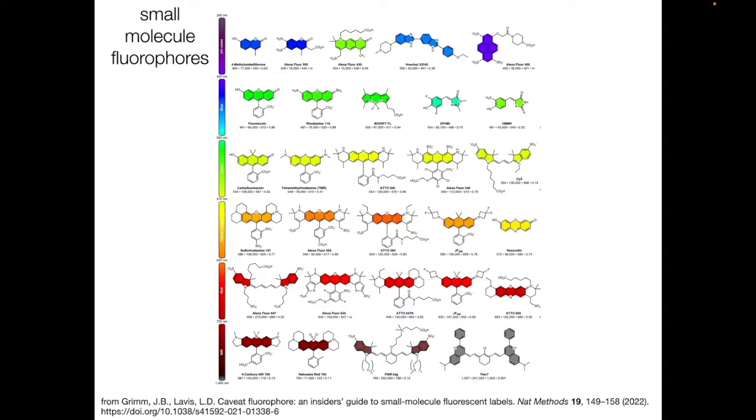Let's start with small molecule fluorophores. Here's a collection of different small molecule fluorophore structures. First, let's look at the similarities. Each fluorophore has a ring structure highlighted in color here. These aromatic rings have the conjugated double bond system that's required for fluorescence to occur.